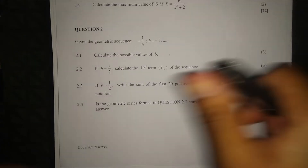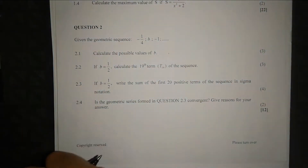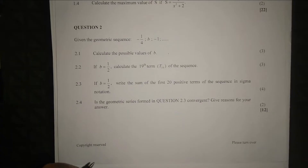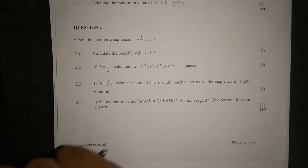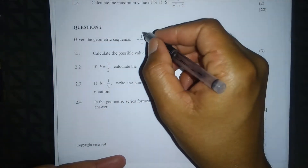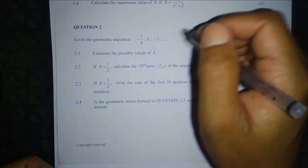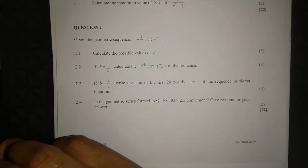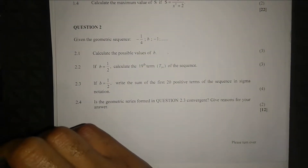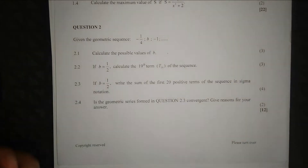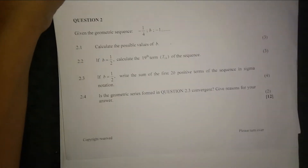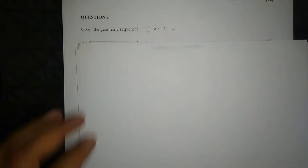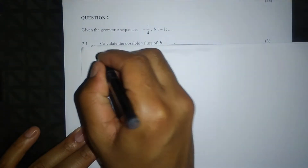Right now on question two, it's another video for the November/March 2017 question paper, Grade 12 Math Paper One. Question two involves a geometric sequence. There are three terms and the middle term, term two, is an unknown value b. For question 2.1, we calculate the possible values of b.